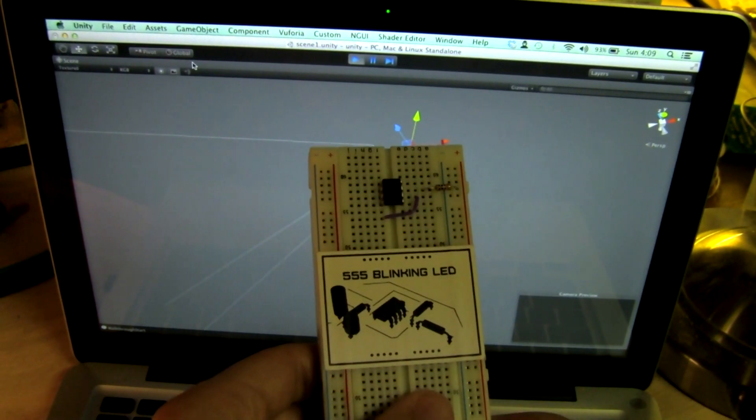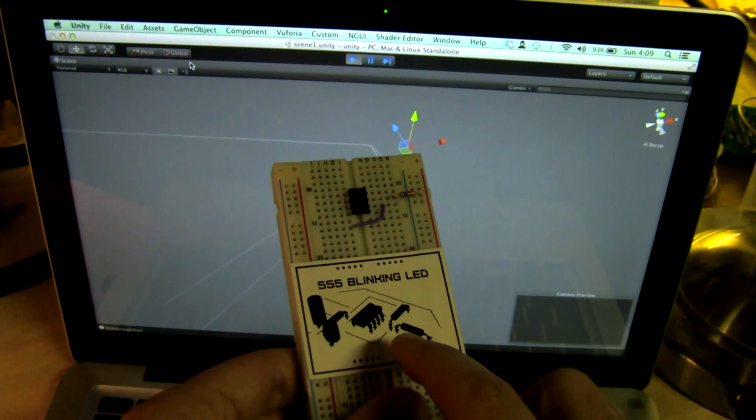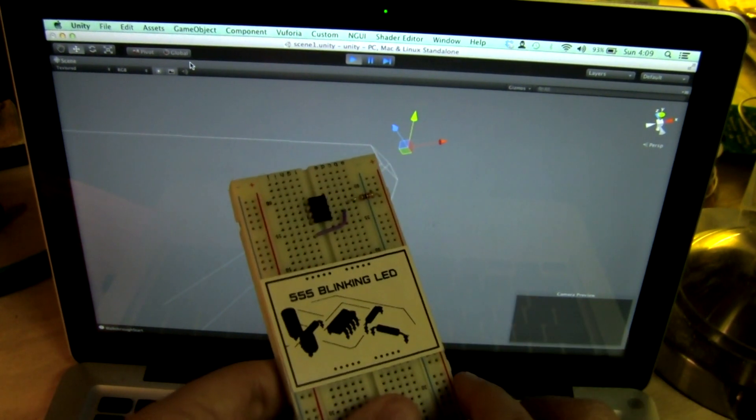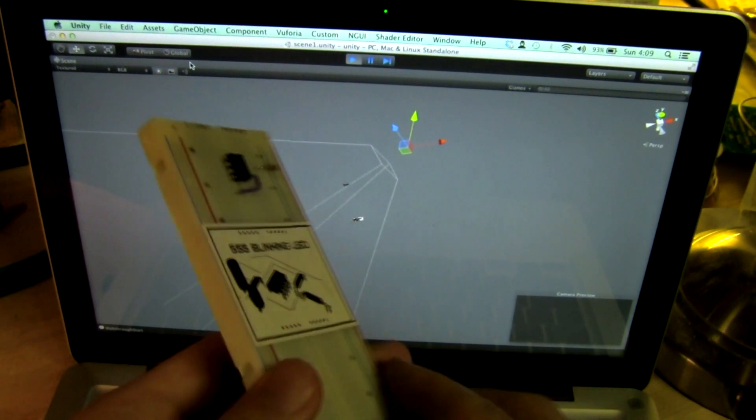So the way this works is that the program is able to look at features on the picture and based on the size of those features and how they're skewed relative to each other, it's able to tell both the distance and the angle that the camera is away from the picture.